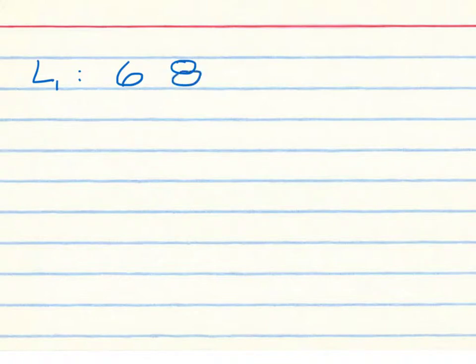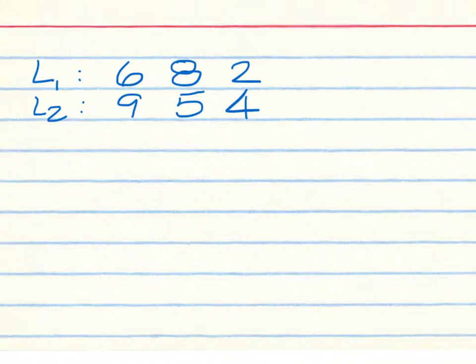The two lists we're going to compare right now: List 1 will have the numbers 6, 8, and 2, and List 2 will have 9, 5, and 4. What we're going to compare is 6 from List 1 and 5 from List 2. Step 1 is to find the mean for List 1.